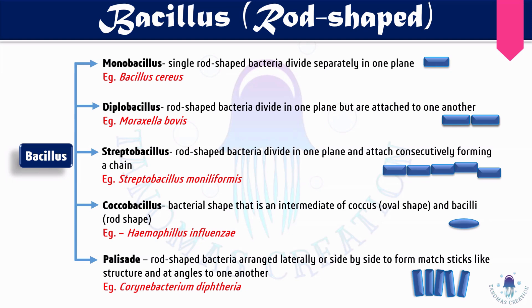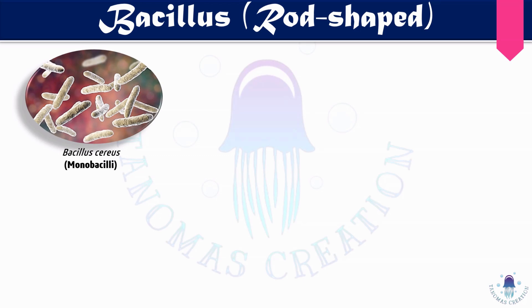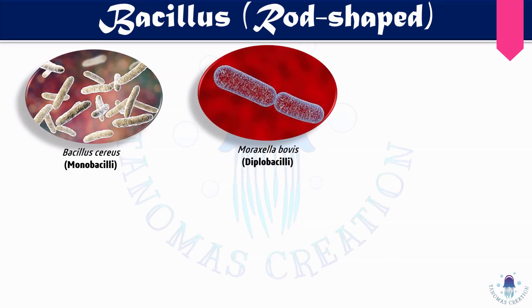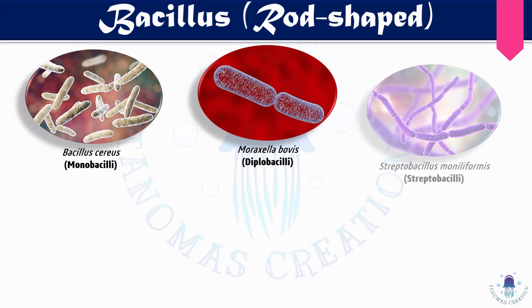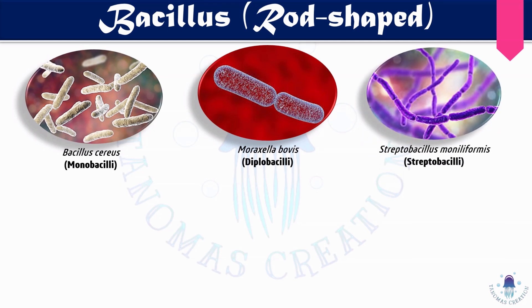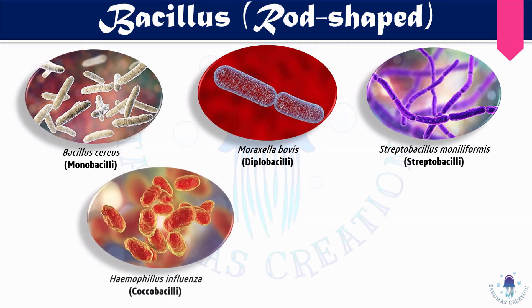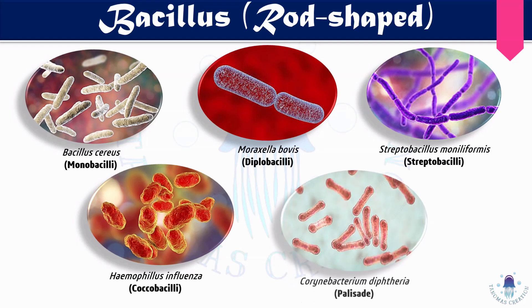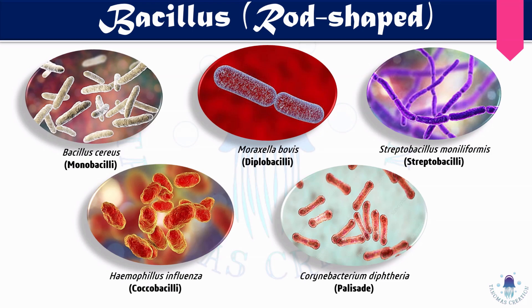Examples of bacillus categories: monobacillus — Bacillus cereus (single rod-shaped); diplobacillus — Moraxella bovis; streptobacillus — Streptobacillus moniliformis; coccobacillus — Haemophilus influenzae, which lacks a proper coccus or rod shape; palisade — Corynebacterium diphtheriae, arranged in a lateral manner.